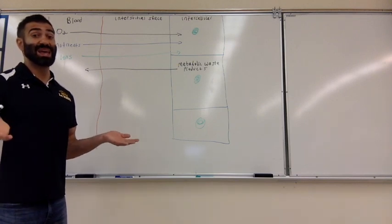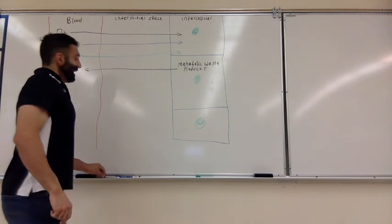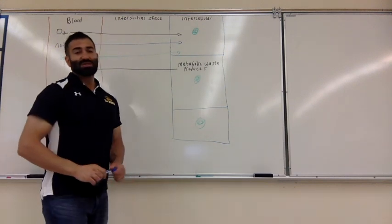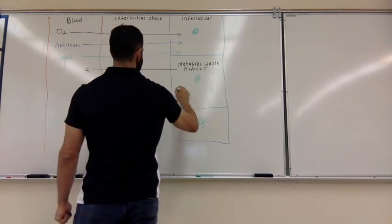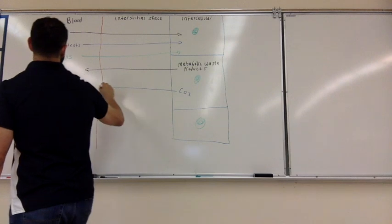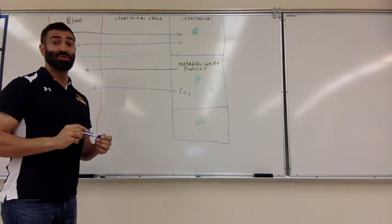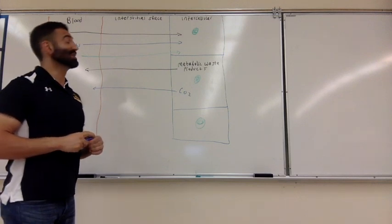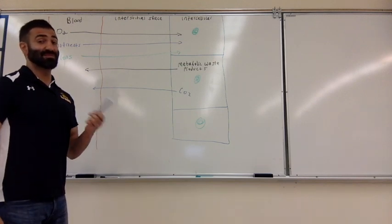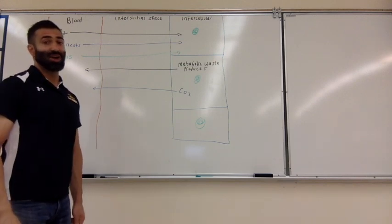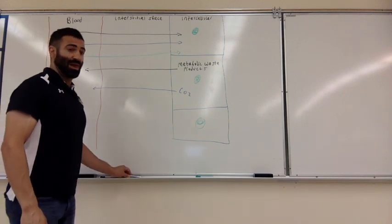Another metabolic waste product is carbon dioxide, or CO2. CO2 is also dumped into our blood, and then our body has to deal with that. CO2, as we'll talk about later this semester, is not good for long periods of time in the blood. Not to spoil it, but carbon dioxide reacts strongly with water to form acidic products.